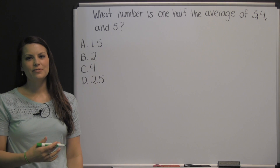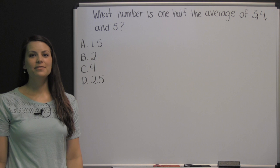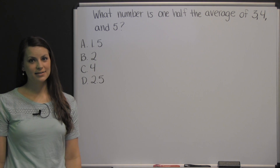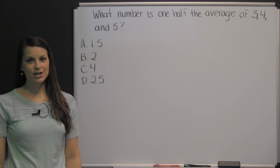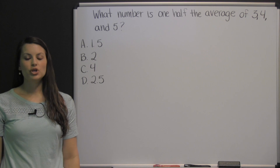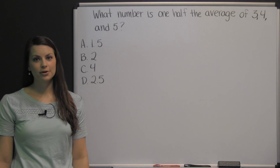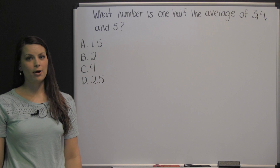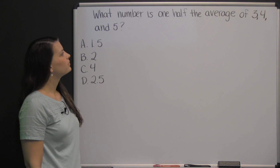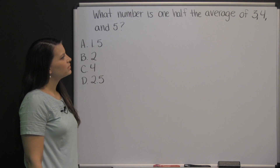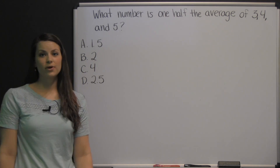This is a question from the applied mathematics section of the TABE test. On the applied mathematics section of the TABE exam, you will be allowed to use a four-function calculator, but you may not need it for every problem. Let's look at this example: What number is one-half the average of three, four, and five?